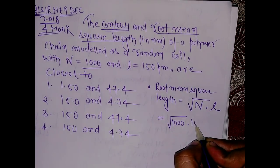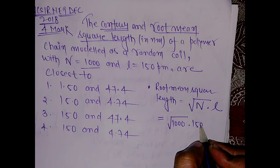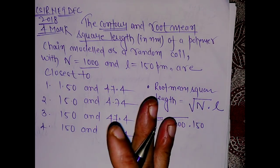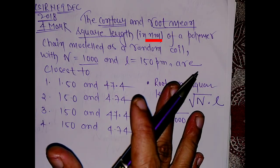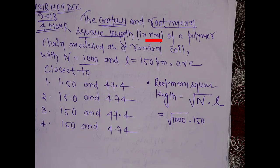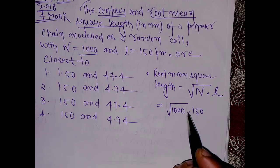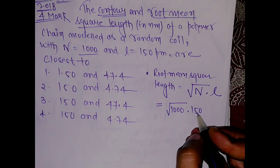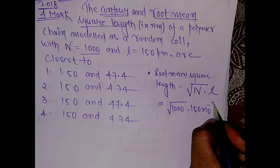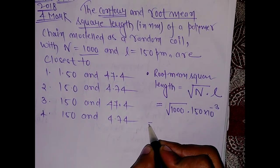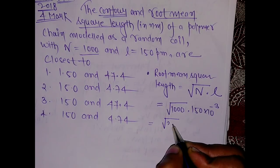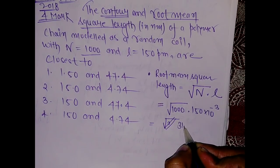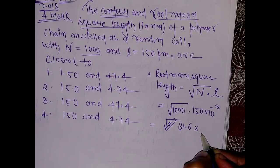When you convert to nanometers, because the answer is in nanometers, this becomes 150 times 10 to the power minus 3 nanometers. Root of 1000 is around 31.6, and it is multiplied by this value.